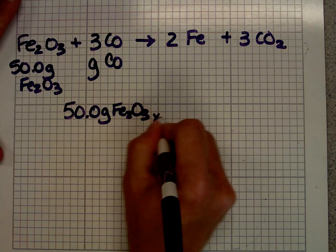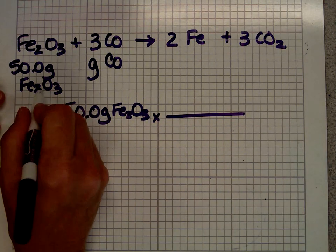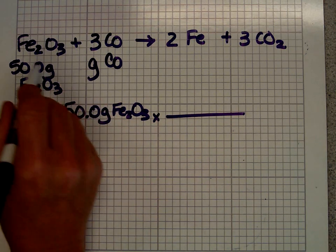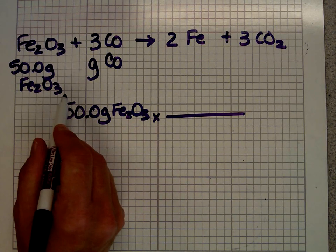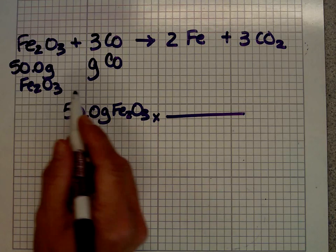I have 50 grams of iron oxide. Now, I can't go from grams of this to grams of that because I have to go through the equation. Anytime you have grams, you know you're going to have to convert it to moles when you're doing stoichiometry problems.